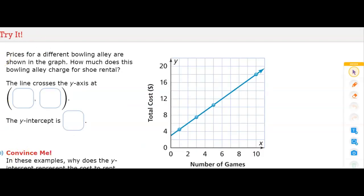Prices for a different bowling alley are shown in the graph. How much does this bowling alley charge for shoe rental? The line crosses the y-axis at blank, blank. They're asking for the coordinates. I can assume because they're going by increments of four that this halfway line will be about two, so that means this point will be about three as the y.